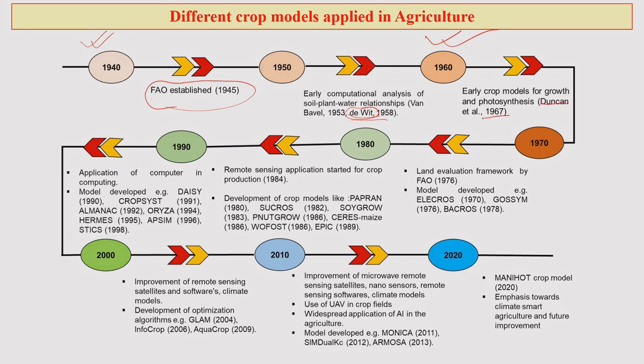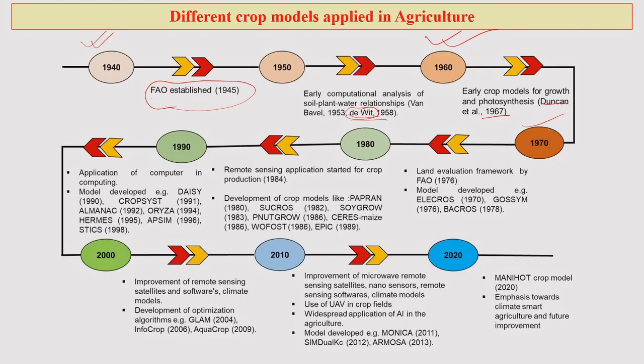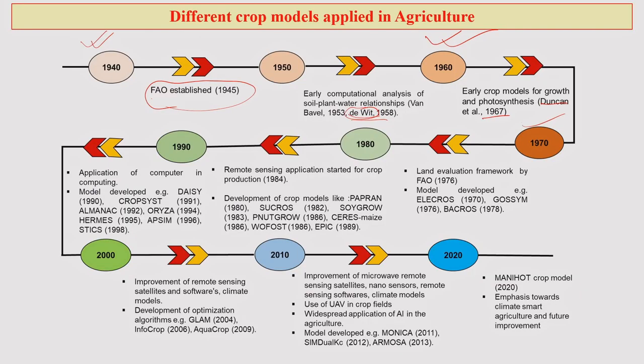When you work in the field of crop modeling, you will find the name of De Witt coming up quite often. Within another decade, by 1960, the crop models for growth and photosynthesis had been developed by Duncan et al. This particular slide is meant to help you appreciate the speed or rate at which crop models have been developed, improved, and strengthened over the last almost 5 to 6 decades. By 1970, a land evaluation framework was announced by FAO.